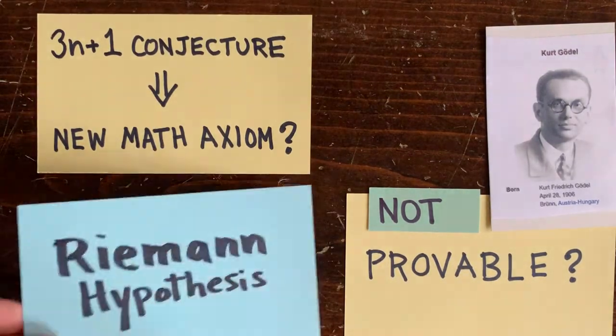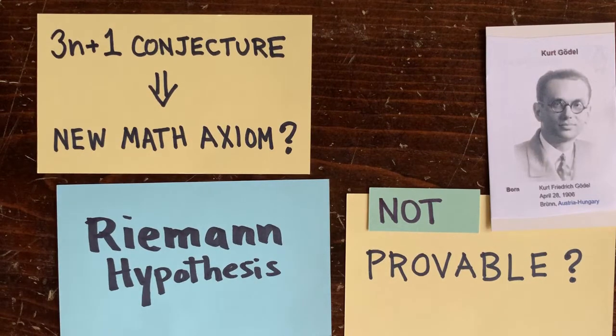I guess there's some mathematicians who do want to add the Riemann hypothesis as a new axiom since so much useful stuff would follow from its truth. But that sounds kind of sketchy.